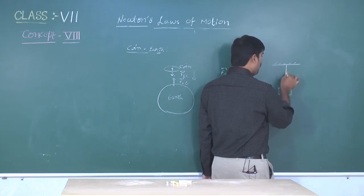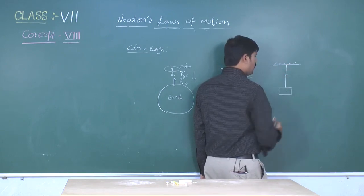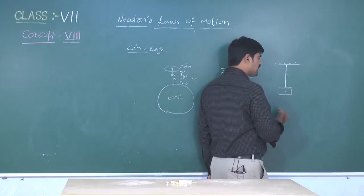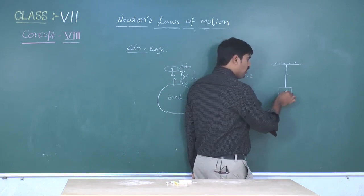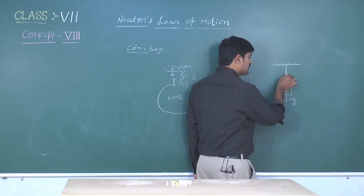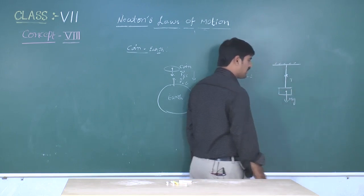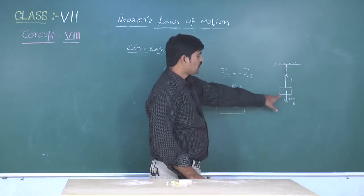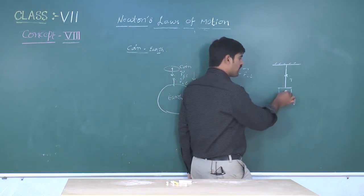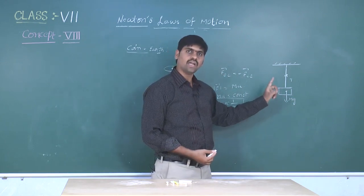Another example: a block is suspended by one string. What are the action and reaction forces here? On this body, gravity mg acts in the downward direction, and tension force develops in the upward direction. The downward force mg is balanced by the tension force. That is why this block is at rest. But these two forces are not action and reaction forces.